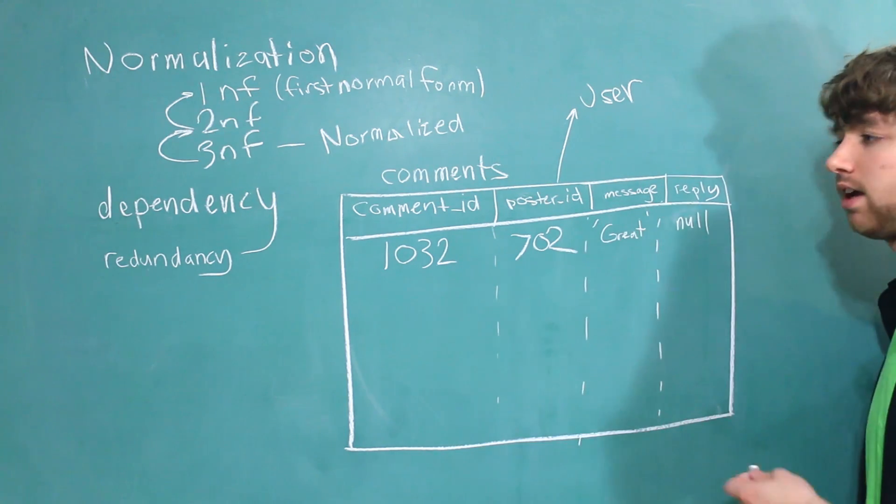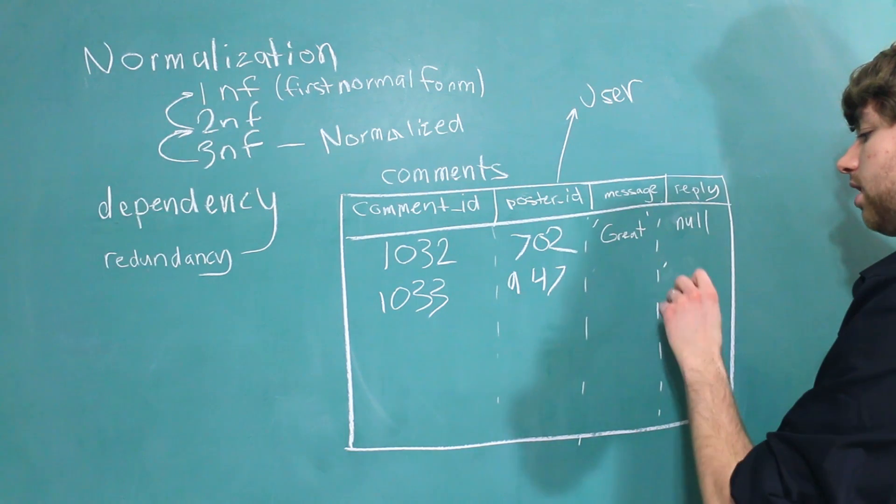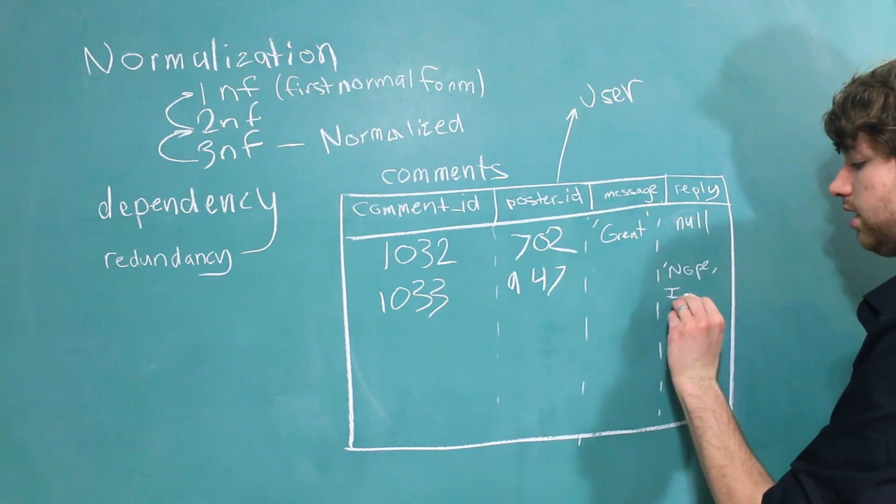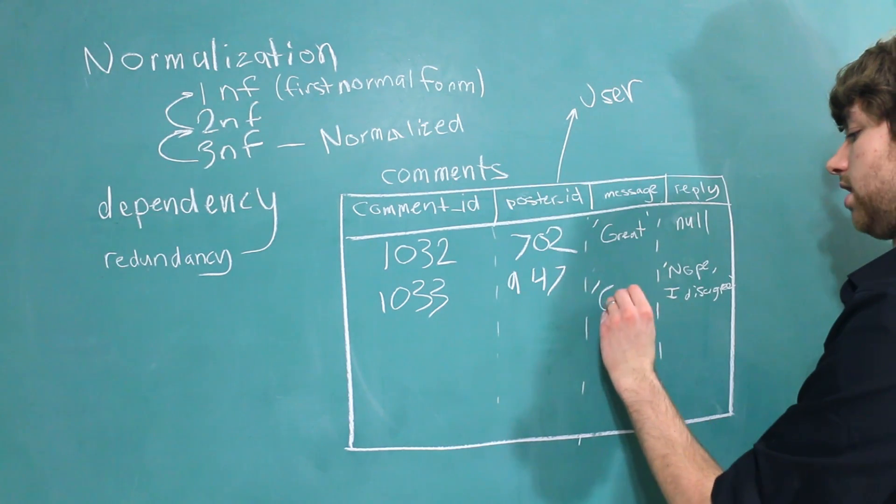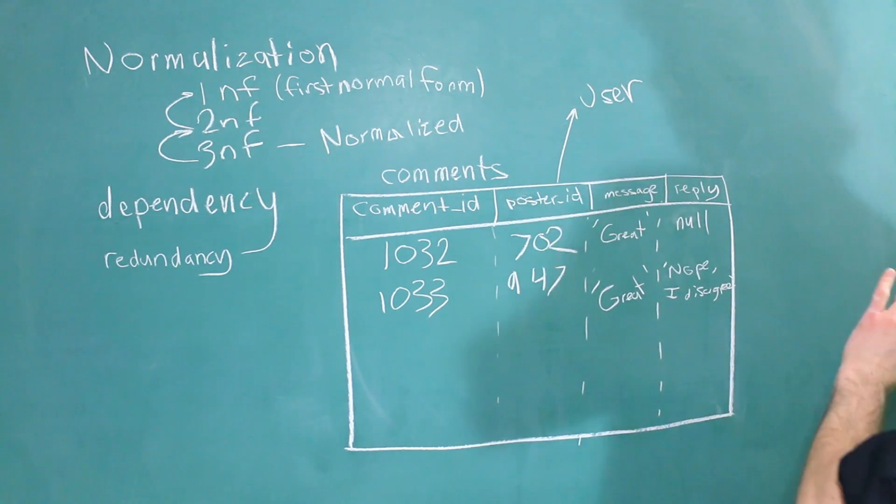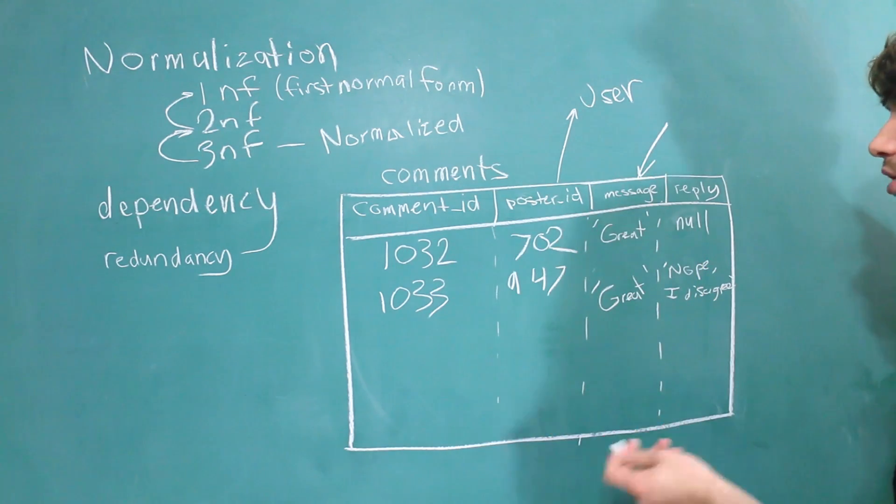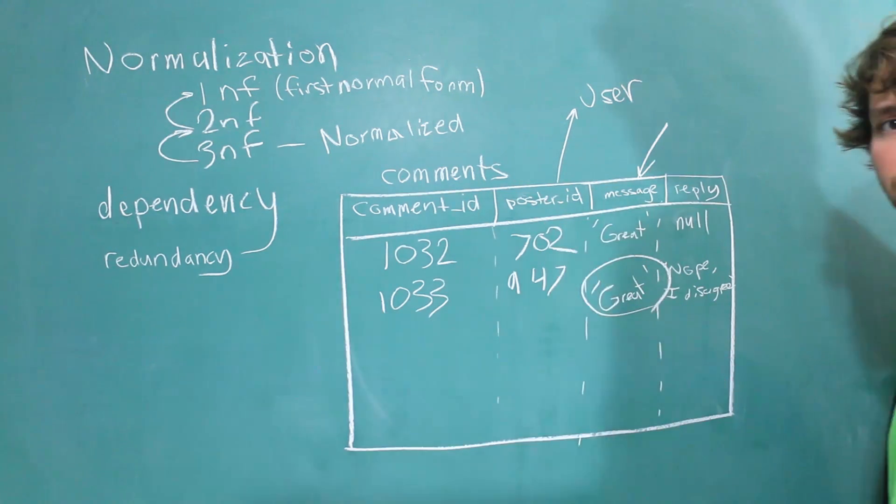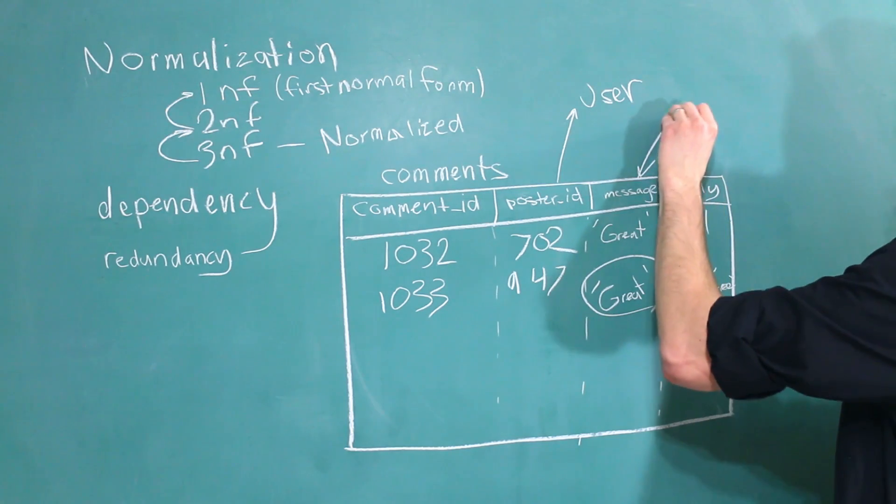Then someone comes back and replies. And because this one is a reply to this message, all we gotta do is say I reply. And this person says nope, I disagree. And the message we're replying to is the one that says great. And you can see that this is just an awful way to design this. That's because we have this message in here twice and also this message cannot uniquely define a row. There could be 50 comments that have great. This here though is an example of redundancy. That's because we have the same data in here twice.